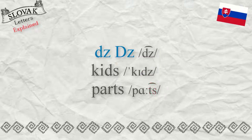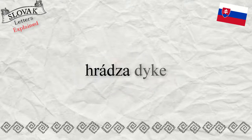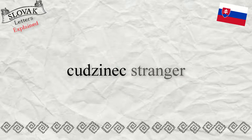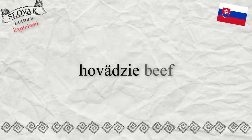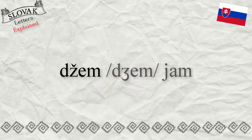A couple of examples of words with the letter DZ: a dike or embankment — Hrádza; a stranger — Cudzinec; beef or beef meat — Hovädzí. DŽ is just the soft variant of the hard DZ, as in the word 'džem,' which means 'jam' in English.